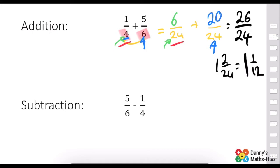And it's the same for take away. We multiply our denominators together. So here we'd get 24 again. We'd do 4 times 5, because we times it by the 6 as well, to give us 20.